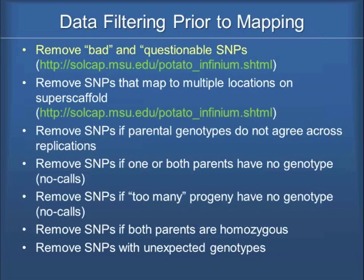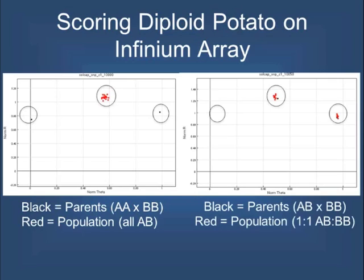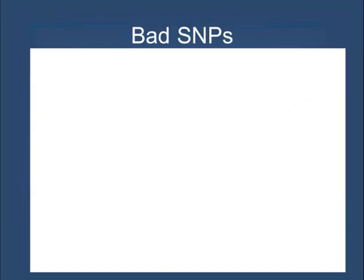The first thing we want to do is remove bad and questionable SNPs. Here are some good SNPs. If these were our homozygous parents and these are our heterozygotes, what we're looking for are ones that are not near the X axis and that they're tightly clustered within the different regions. Over here would be our homozygous class BB, over here is our homozygous class AA, and then our heterozygous class in the middle. Here you can see a one-to-one segregation between the progeny when you have one heterozygous parent.